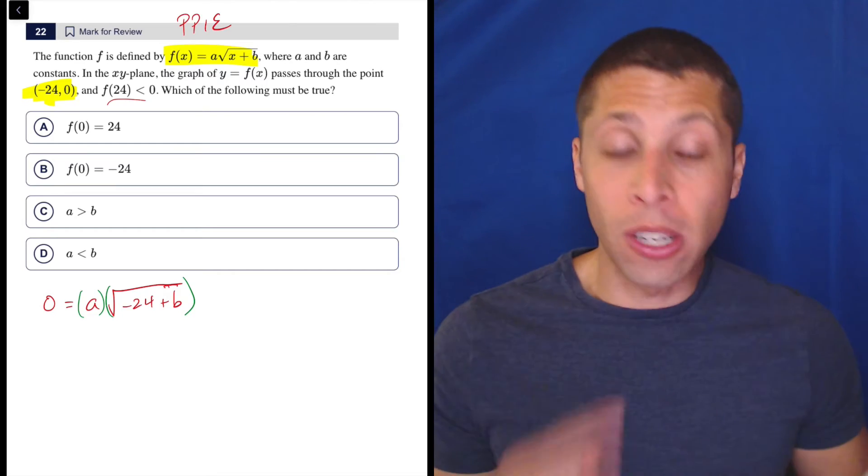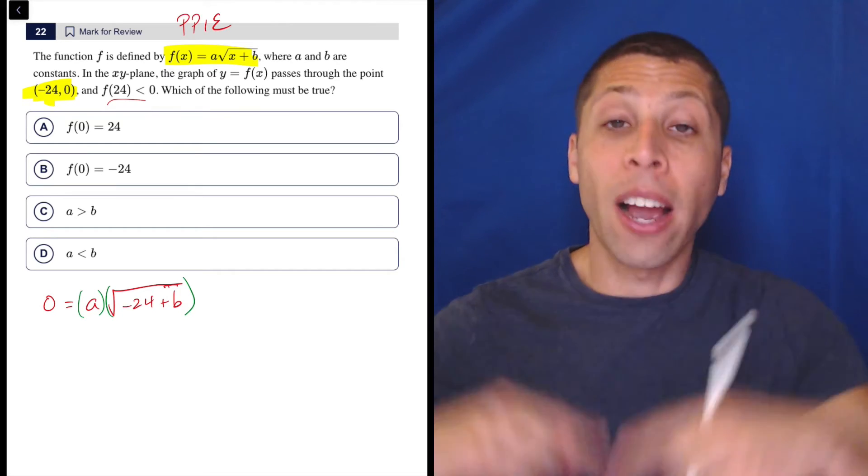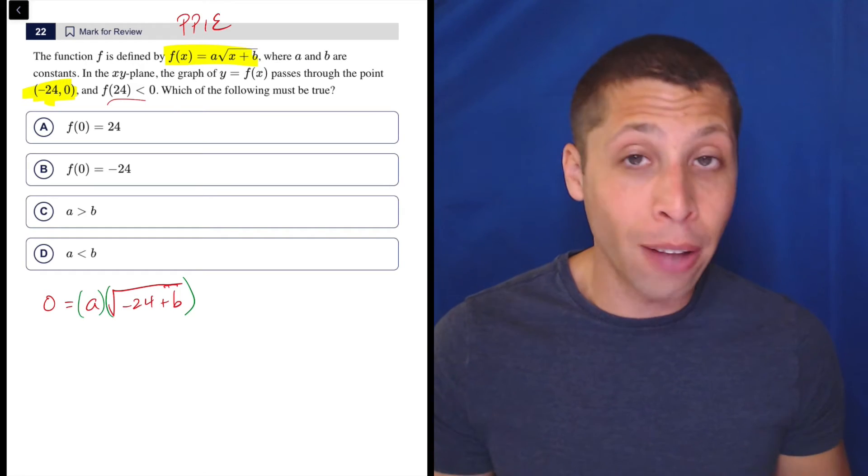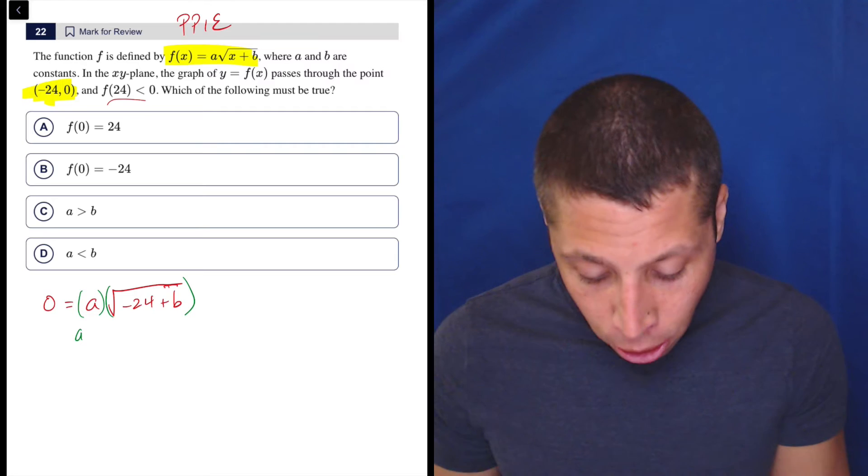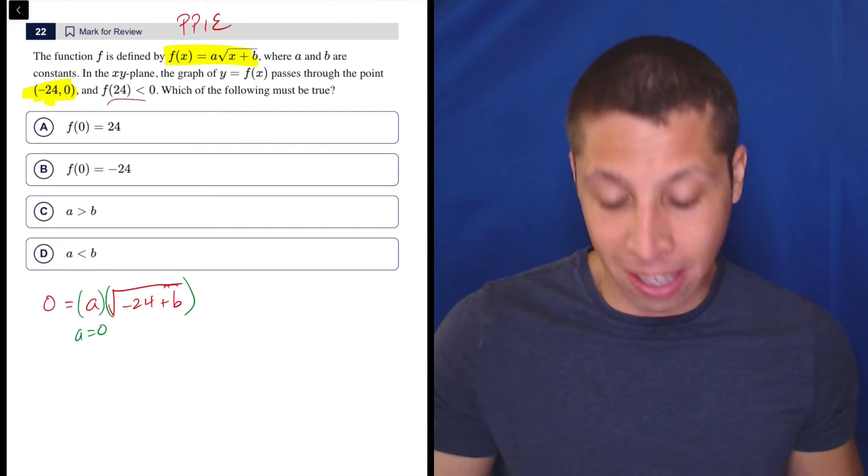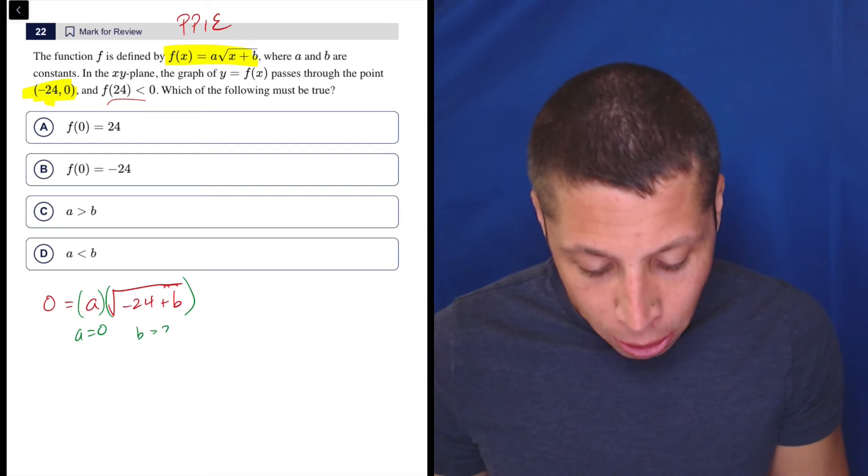And if either of those is equal to 0, then the entire thing will be equal to 0. So this is going to basically give me some possible values of A and B. A could be 0 by itself, because if it were, then that would wipe everything out and give me 0.